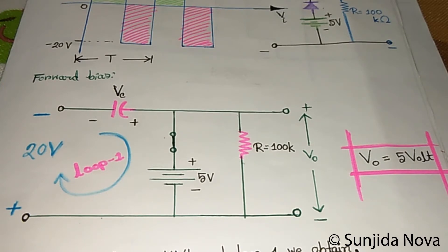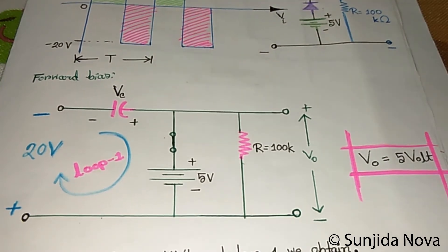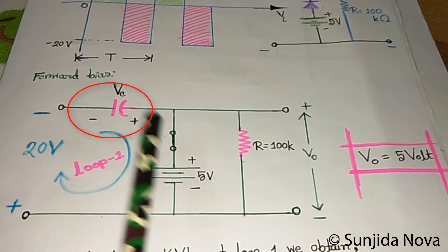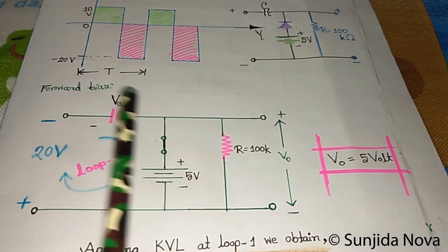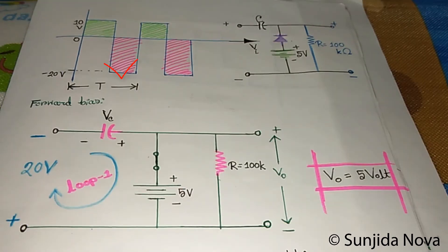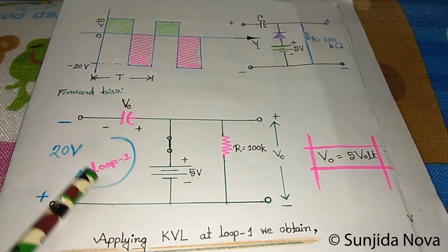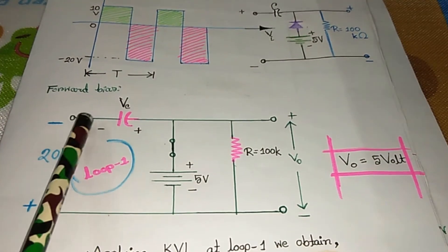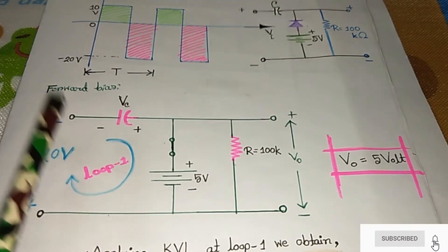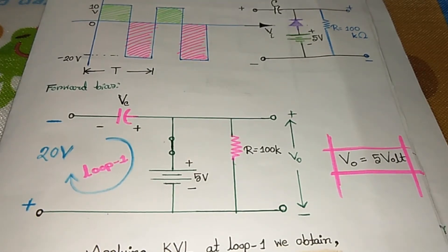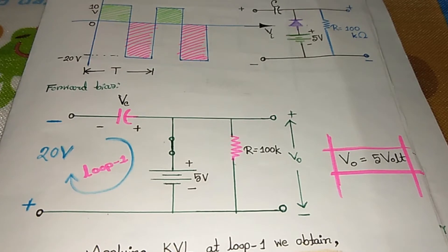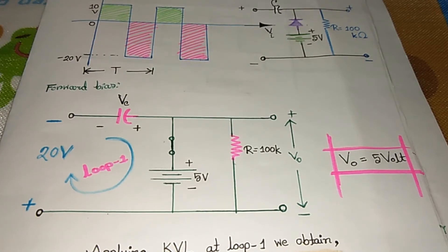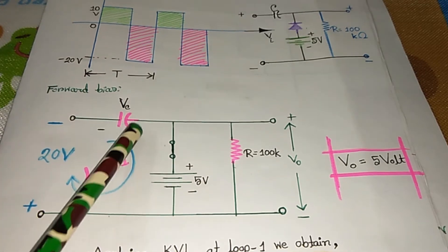Now we have found the output voltage. Next, we need to identify the negative and positive terminals of the capacitor. Let me discuss this. Based on the wave input direction and the forward bias condition, we identify the positive and negative terminals of the capacitor.